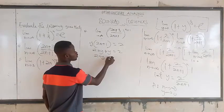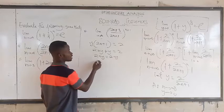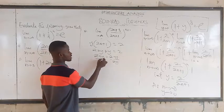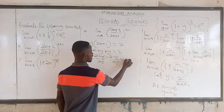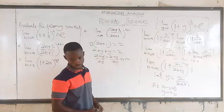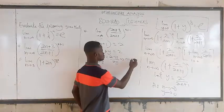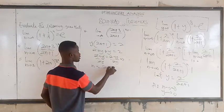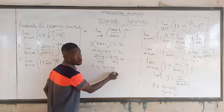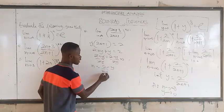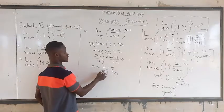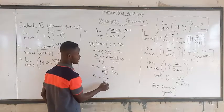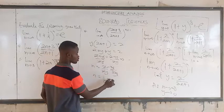To make n the subject: 2ny = 2 minus y. Now divide both sides by 2y — this cancels — so n = (2 - y)/(2y). We can write this as n = 1/y minus 1/2. Very good.